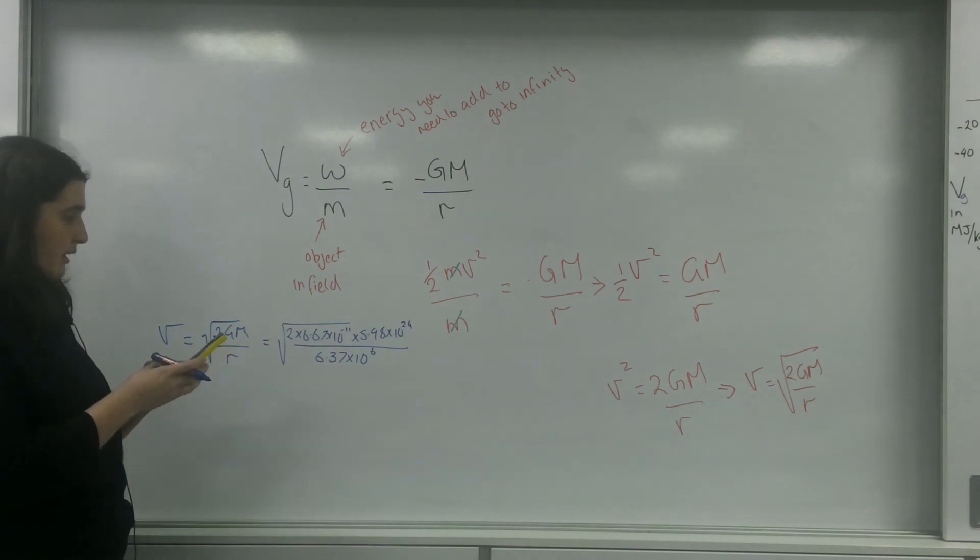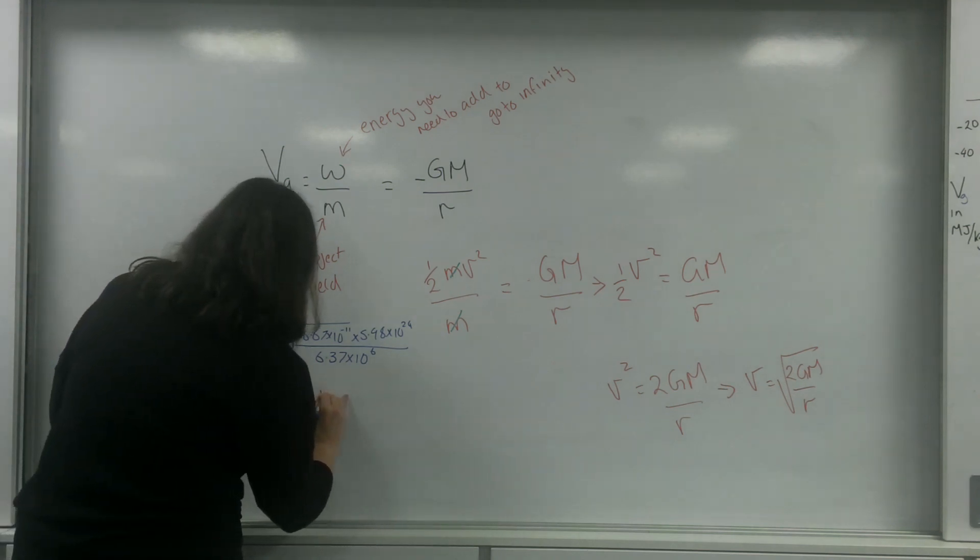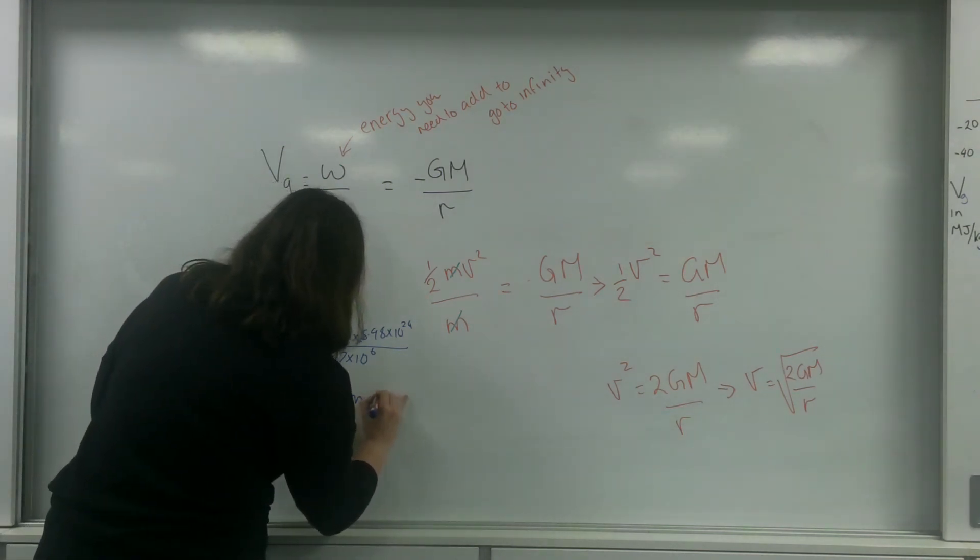I'll bung this into the calculator. 2 times 6.67 times 10 to the minus 11 times 5.98 times 10 to the 24 divided by 6.37 times 10 to the 6, and square root of the answer. And you get an answer of 11.1 kilometres per second.